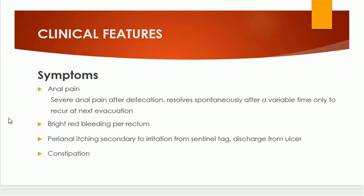Another feature of anal fissure is that patients sometimes present with bright red bleeding per anum — the patient passes fresh blood per rectum during defecation, drops falling in the commode. Another clinical symptom is perianal itching, which is secondary to irritation from the sentinel tag or discharge from the ulcer. An important association is constipation — patients with anal fissure are constipated because it is a painful condition and patients try to avoid defecation, which increases constipation.